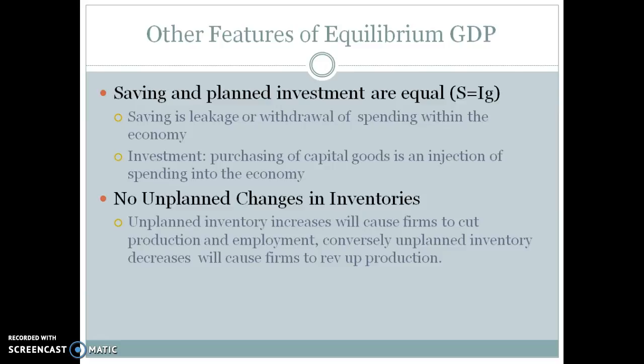At equilibrium, there are no surprises, no surpluses, and no sudden shortages — inventory is right where it needs to be. Businesses don't have to rev up or cut production. Conversely, we have a situation of full employment, meaning there is no cyclical unemployment being experienced in the economy at that time.